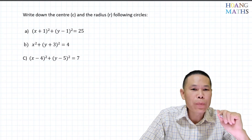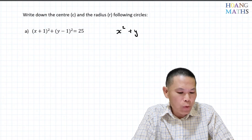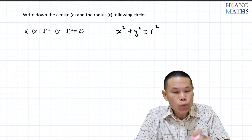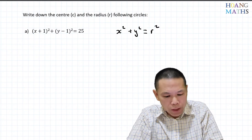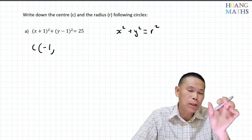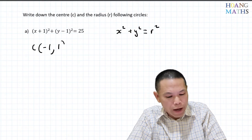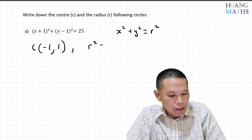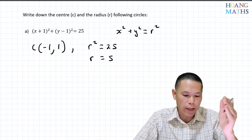Let's go through the solutions. The general rule is x squared plus y squared equals r squared, with center (0,0) and radius r. For the first equation, because we have (x plus 1) squared, the plus 1 inside means it moved one unit to the left, so the x-coordinate of the center is negative 1. For y, because we have (y minus 1) squared, that means it moved one unit up, so the y-coordinate is 1. The center is (negative 1, 1). Since r squared equals 25, the radius is root of 25 equals 5.